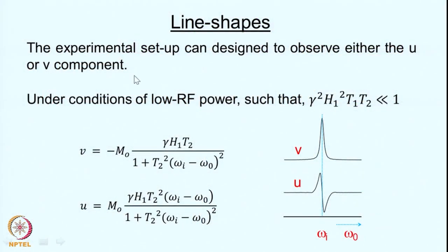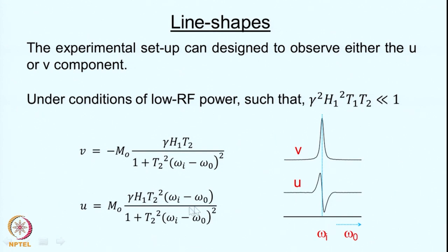The experimental setup can be designed to observe either the U component or the V component. Under conditions of low RF power such that γ²H₁²T₁T₂ ≪ 1 — called the no-saturation condition — the expressions simplify: V equals minus M₀γH₁T₂ divided by 1 plus T₂² (ωI minus ω₀)², and U is given by M₀γH₁T₂² times (ωI minus ω₀) divided by 1 plus T₂² (ωI minus ω₀)², where ωI is the nuclear spin precession frequency and ω₀ is the RF frequency.